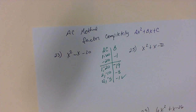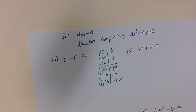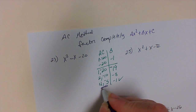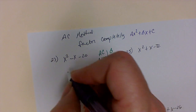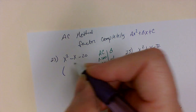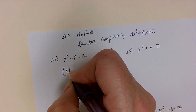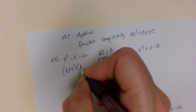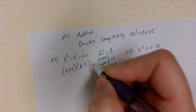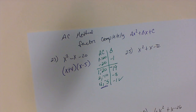When we have a 1 out front, we can take our two numbers and go straight to our answer: x plus 4 times x minus 5. And that's all you have to do.